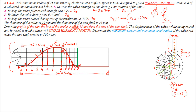Mark these distances on the cam profile diagram. Point O2A is coinciding in the displacement diagram, so it coincides here as well. Take distance 1 to B and mark point B. Take distance 2 to C — whatever distance from 2 to C in the displacement diagram, mark the same on the line here. In the same way, mark 3 to D and complete the cam profile diagram.